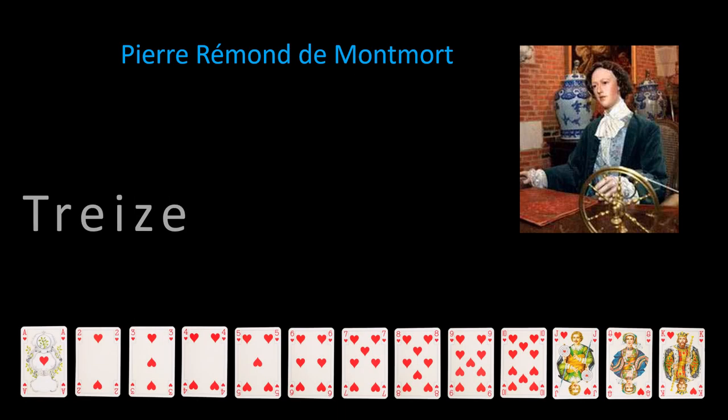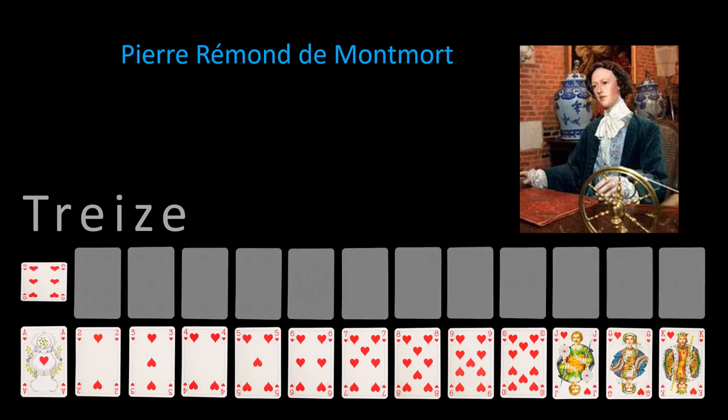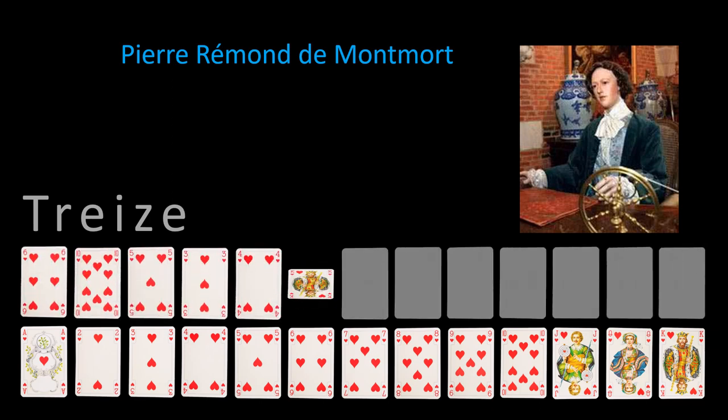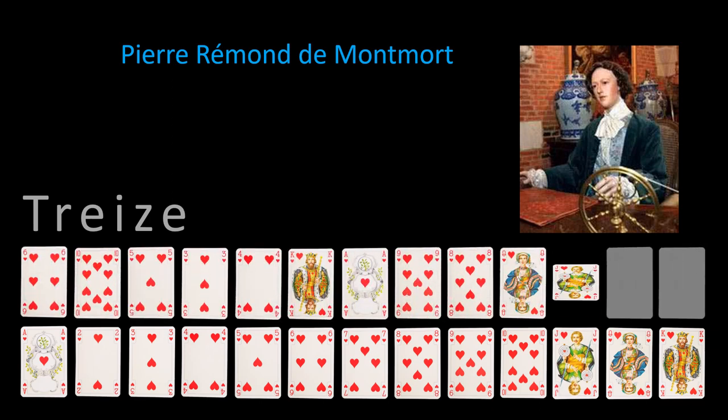The matter of counting derangements arose naturally in the game of 13 he invented, which involved shuffling the 13 distinct playing cards and comparing them against their original position in the deck.